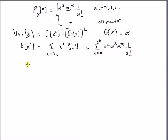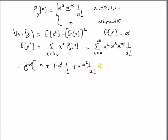By expanding this series, we have e^(-alpha) times: the first term is 0, the second is 1 times alpha^1 times (1/1!), the third term is 4 times alpha² times (1/2!), the next is 9 times alpha³ times (1/3!), and so on.